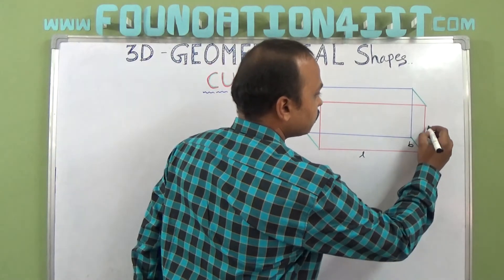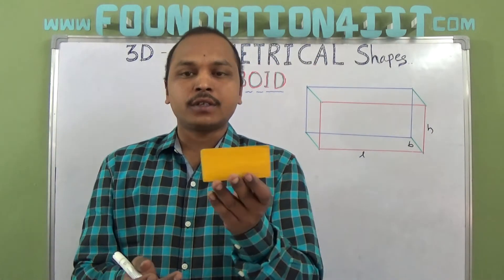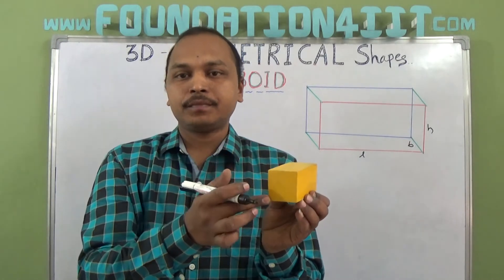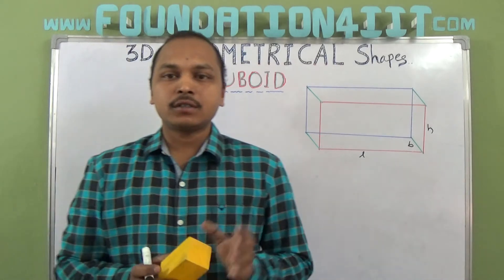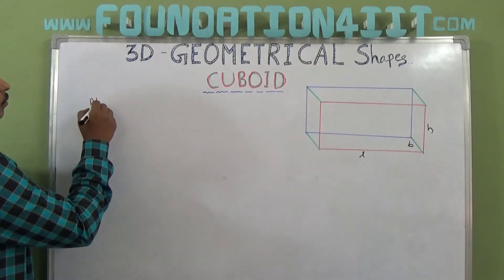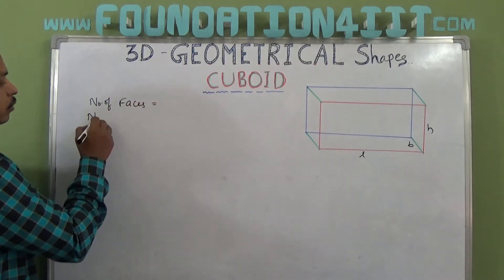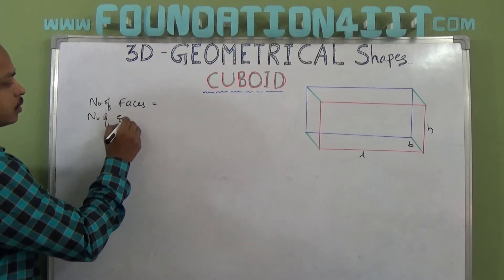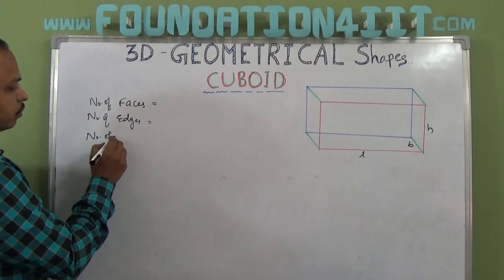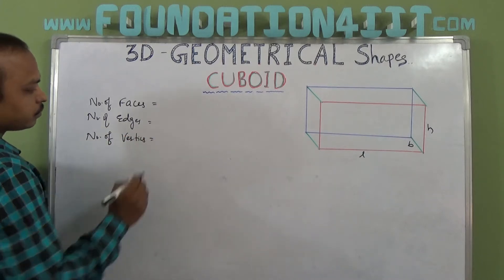Observe the diagram. For this cuboid with length, breadth, and height as the three dimensions, we will find the number of faces, number of edges, and number of vertices.